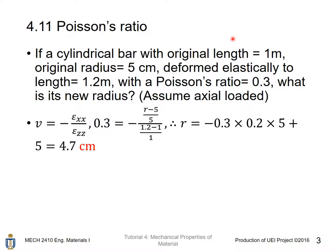Using the definition of Poisson's ratio, we first identify the axial direction and the transverse direction, or the axial length and the transverse length. The original axial length is equal to 1 m. The new length is 1.2 m, and that's why epsilon Z, which is the strain at the Z direction — the axial direction — is equal to (1.2 minus 1) over 1, which is dimensionless. That's why we don't need to convert the length value.